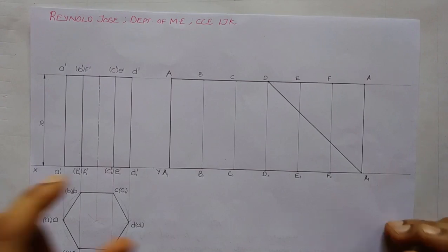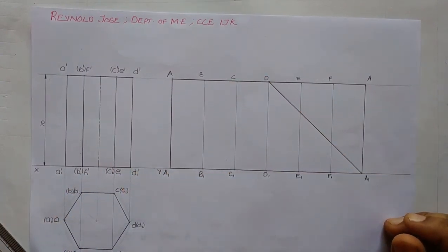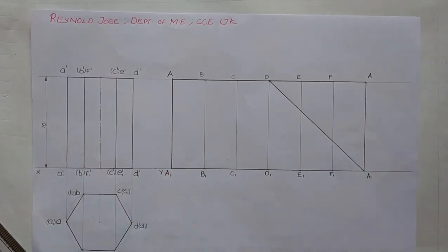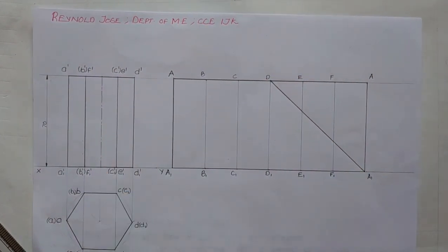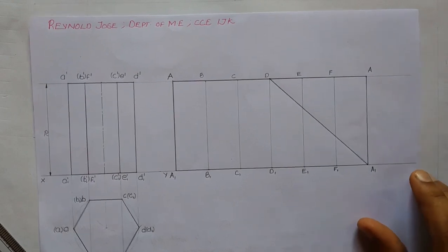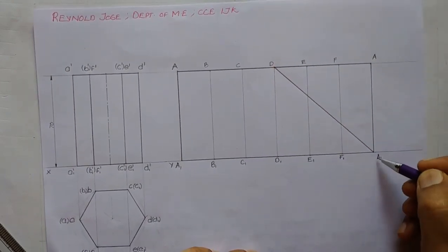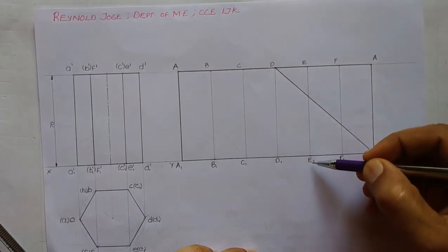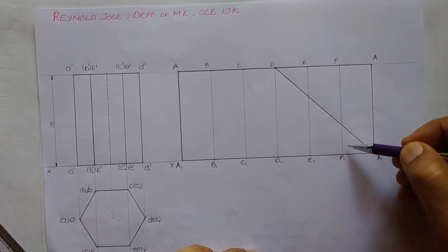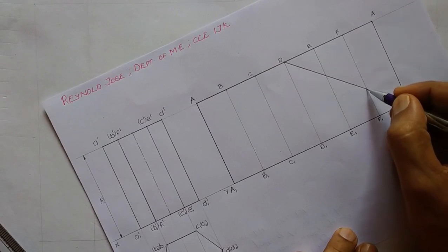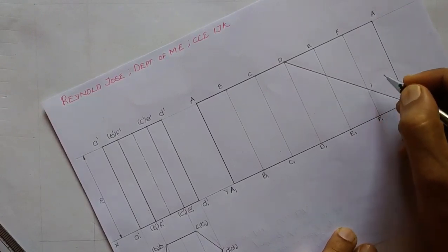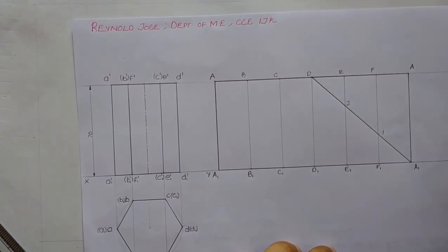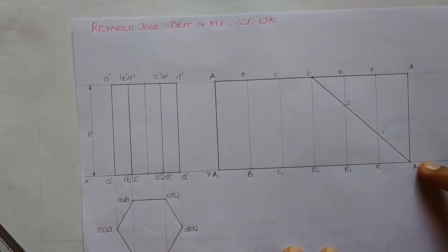The path is indicated in the development. The same path must also be indicated in the elevation, which is the front view. The path meets edges FF1 and EE1 at intermediate points, which we mark as point 1 and point 2. We will now transfer these points to the front view.